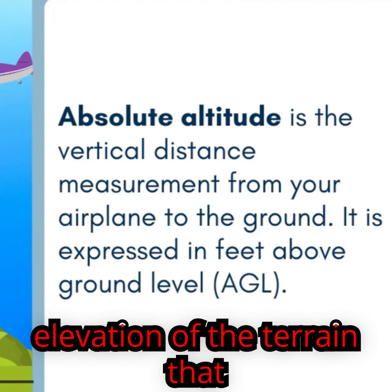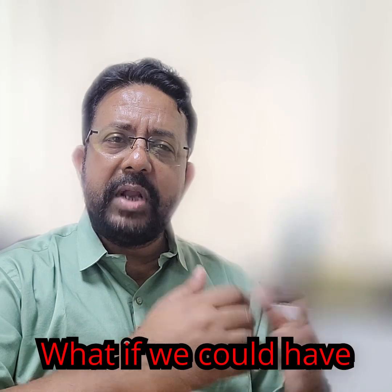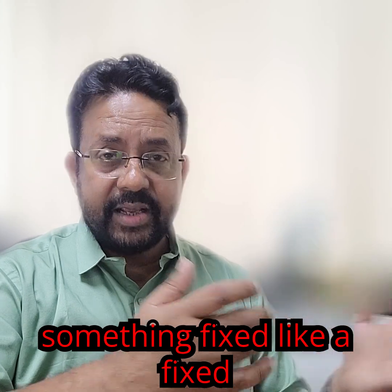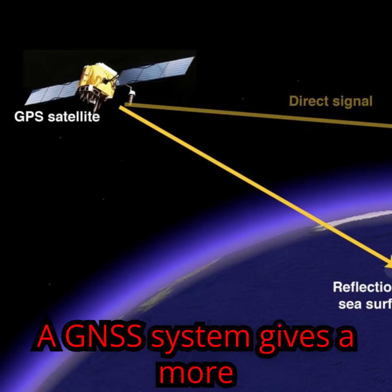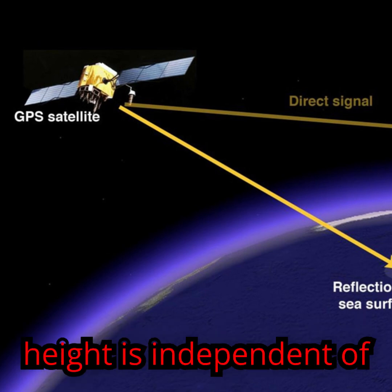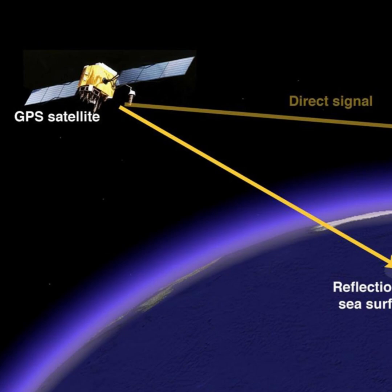While an aircraft is holding a specific MSL altitude, the above ground level altitude will vary depending upon the elevation of the terrain it is flying over. What if we could have something fixed, like a fixed datum? A GNSS system gives a more permanent solution, and GNSS height is independent of atmospheric pressure and temperature.